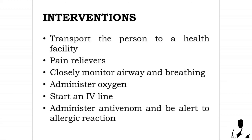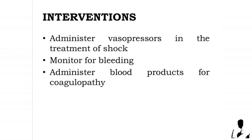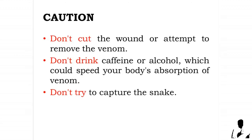Start an IV line with normal saline or lactated Ringer's solution. Administer antivenom and be alert to allergic reaction. Administer vasopressors in the treatment of shock. Monitor for bleeding; administer blood products for coagulopathy. Caution: don't cut the wound or attempt to remove the venom. Don't drink caffeine or alcohol, which could speed your body's absorption of venom. Don't try to capture the snake — try to remember its color and shape so you can describe it, which will help in your treatment. If you have a smartphone and it won't delay getting help, take a picture of the snake from a safe distance to help with identification.